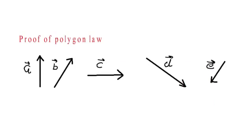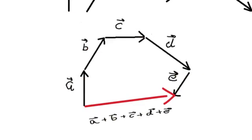Let us say we want to add A vector, B vector, C vector, D vector, and E vector. What we do is we place the tail of B over the head of A, then we place the tail of C over the head of B, then the tail of D over the head of C, and then we place the tail of E over the head of D.